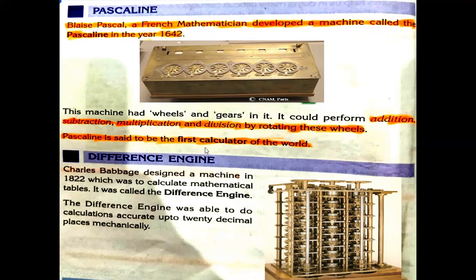Pascaline is said to be the first calculator of the world. We will also discuss about the difference engine. Charles Babbage designed a machine in 1822 which was to calculate mathematical tables. The difference engine was able to do calculations accurate up to 20 decimal places mechanically.